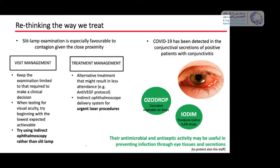Regarding treatment: if we need to see and treat the patient, we try to use indirect ophthalmoscopy rather than the slit lamp to examine the retina. If we need to do laser, we try to use the indirect ophthalmoscope instead of slit lamp laser. We are also using ozonated drops and povidone iodine 0.7% drops, which have antimicrobial and antiseptic activity that may help prevent infection through eye tissue and secretion — protecting staff as well as patients.